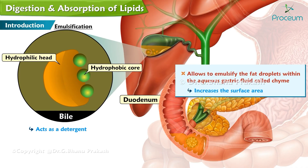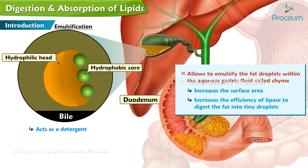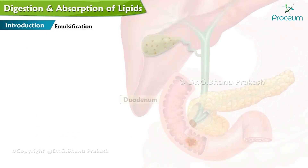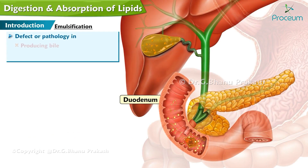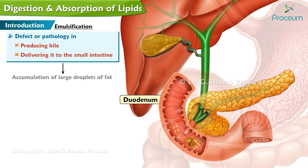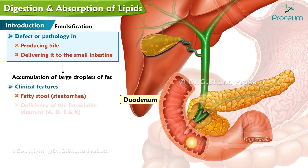This increases the surface area and in turn increases the efficiency of lipase to digest the fat into tiny droplets. Bile is a very important component in absorbing dietary fat. Any defect or pathology in producing bile or delivering it to the small intestine would result in an accumulation of large droplets of fat that cannot be easily digested for absorption. Therefore, a patient might present with fatty stool and deficiency of the fat-soluble vitamins A, D, E, and K.